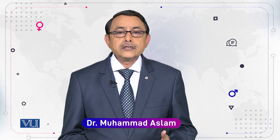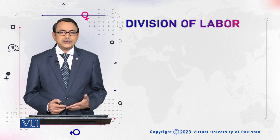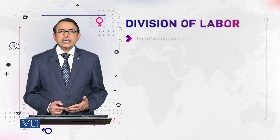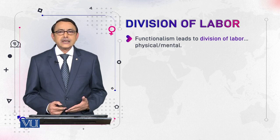In this module you will know how functionalism needed sexual oppositions. It needed division of labor — work that can be mental, that can be social, that can be physical. So all these fall under the term division of labor: who does what and where. When we talk about functionalism, it entails and results in division of labor.